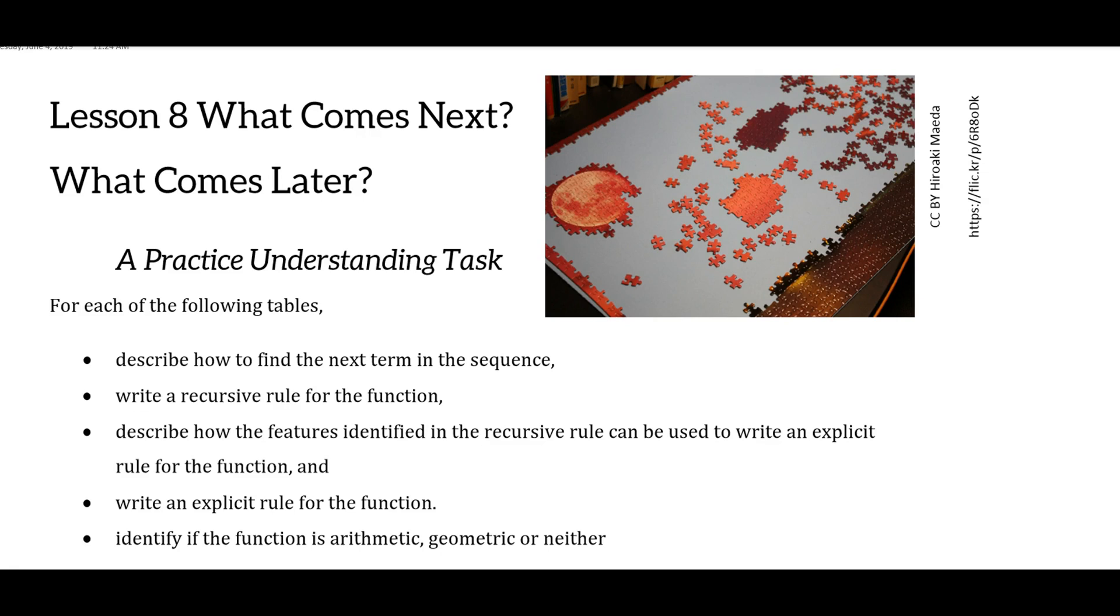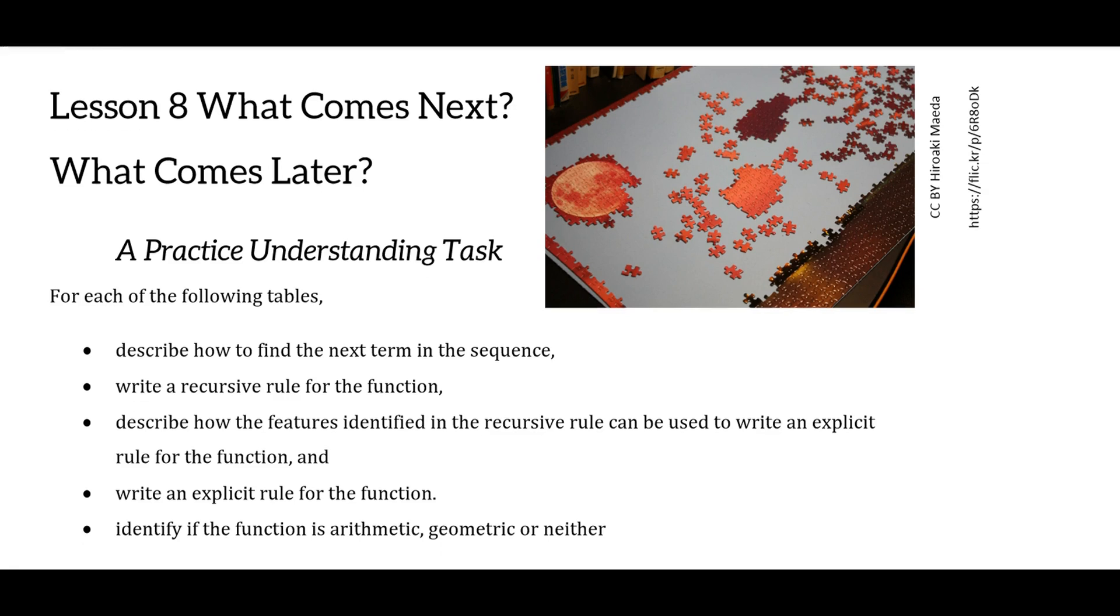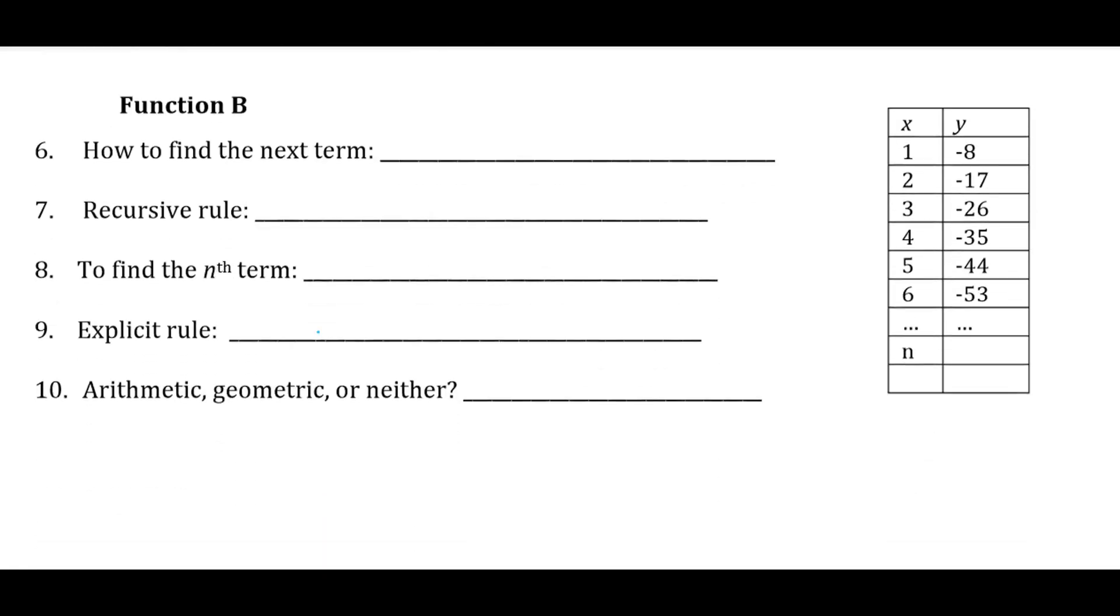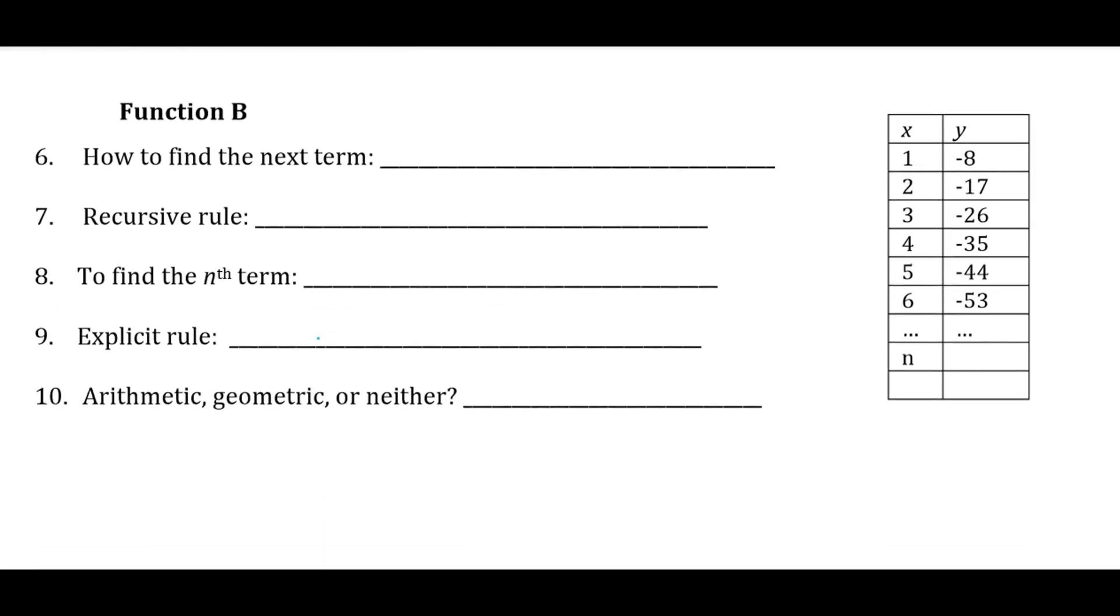So I'm going to do four examples from this task to help you get the idea, and then you should be able to do the others. So starting off with function B, so we have negative 8 going down to negative 17, going down to negative 26, going down to negative 35. So when I look at that, I think of a possible constant rate of change. So let's just see from negative 8 down to negative 17, that's subtracting 9.